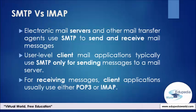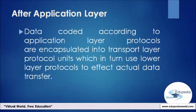Data coded according to application layer protocols are encapsulated into transport layer protocol units, which in turn use lower layer protocols to effect actual data transfer. Application layer protocols generally treat the transport layer and lower level protocols as black boxes which provide a stable network connection across which to communicate. The transport layer and lower level layers are unconcerned with the specifics of the application layer protocols.